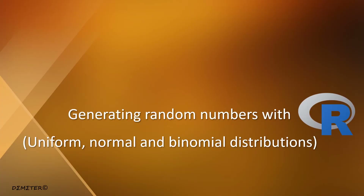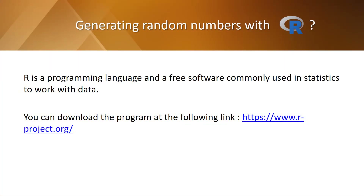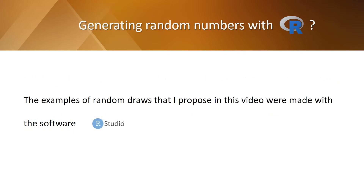How to generate random numbers with R software from a uniform, a normal, or a binomial distribution. R is a programming language and a free software commonly used in statistics to work with data. You can download the program by following the link on the screen. The examples in this video were made with RStudio, which is a software using the R programming language.